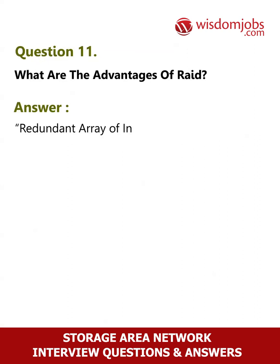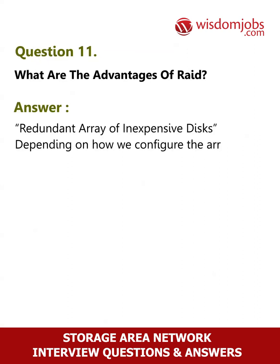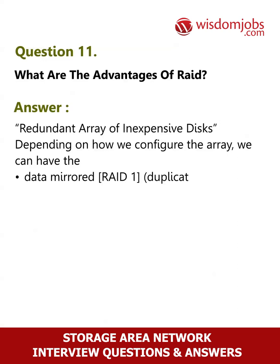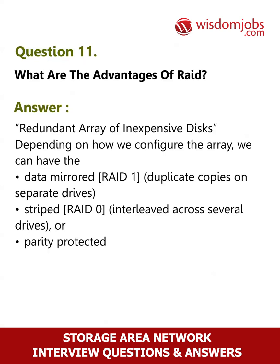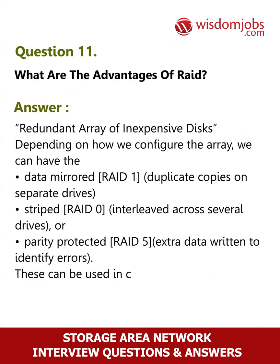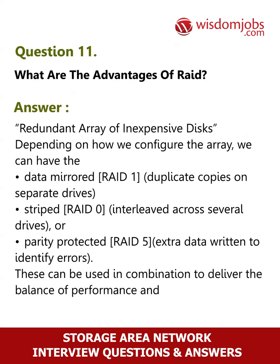Question 11: What are the advantages of RAID? Redundant Array of Inexpensive Disks — depending on how we configure the array, we can have the data mirrored (RAID 1, duplicate copies on separate drives), striped (RAID 0, interleaved across several drives), or parity protected (RAID 5, extra data written to identify errors). These can be used in combination to deliver the balance of performance and reliability that the user requires.